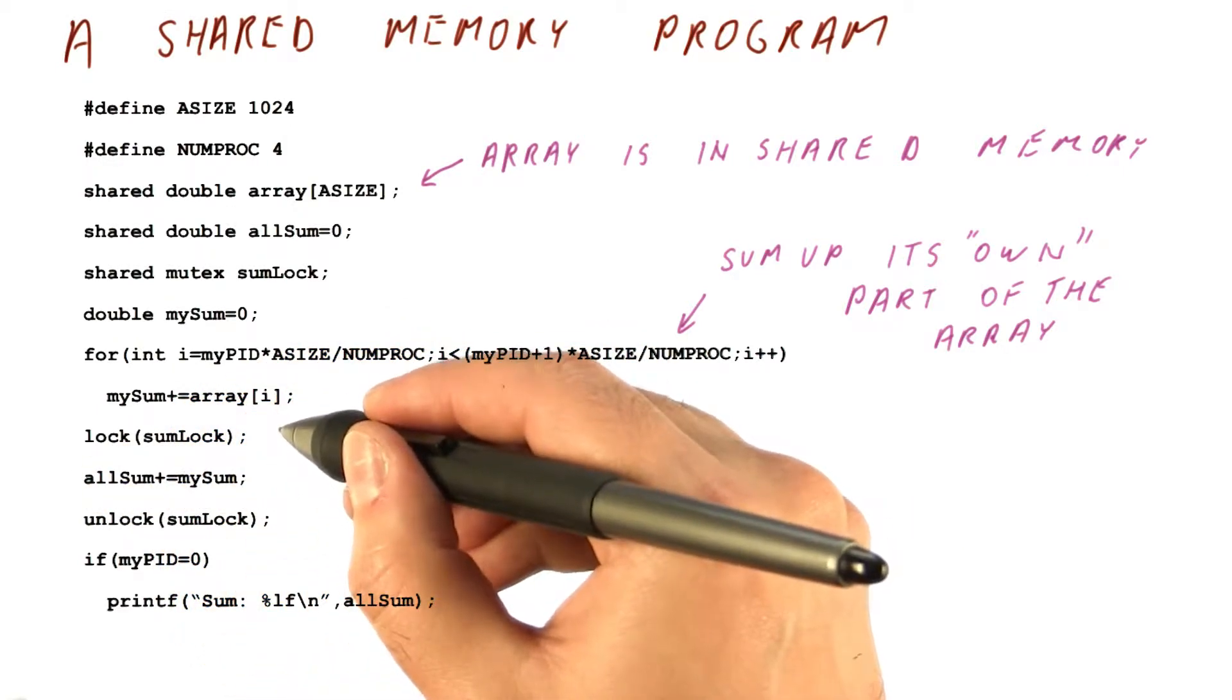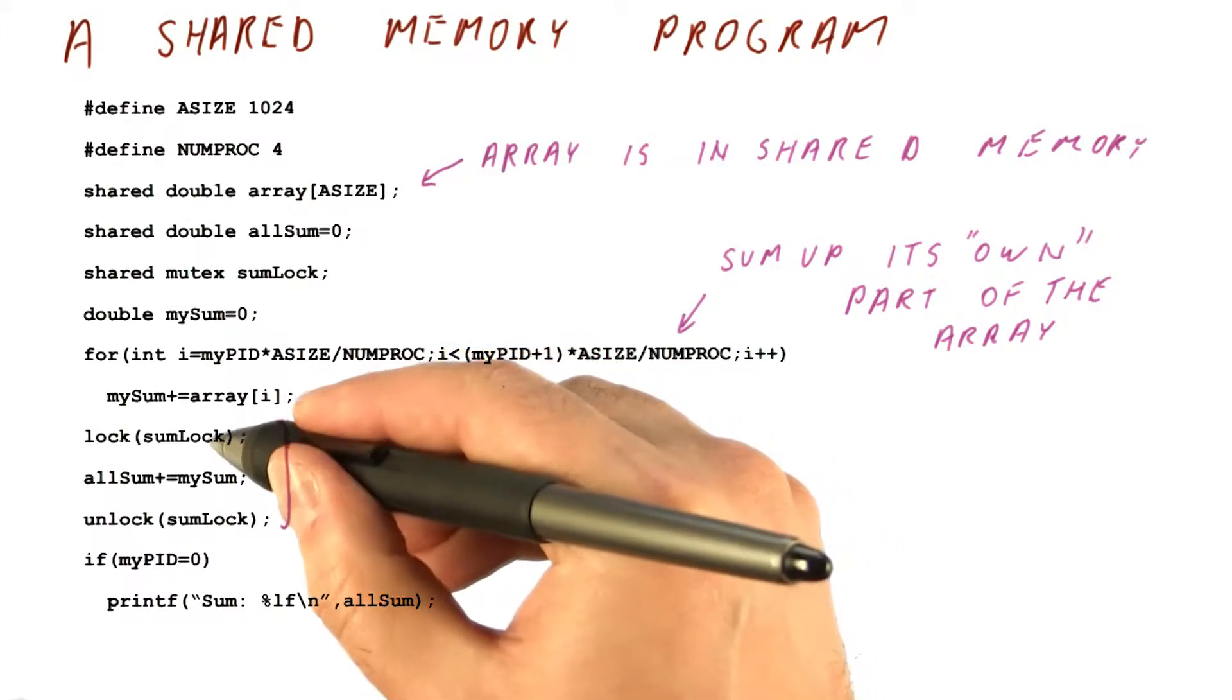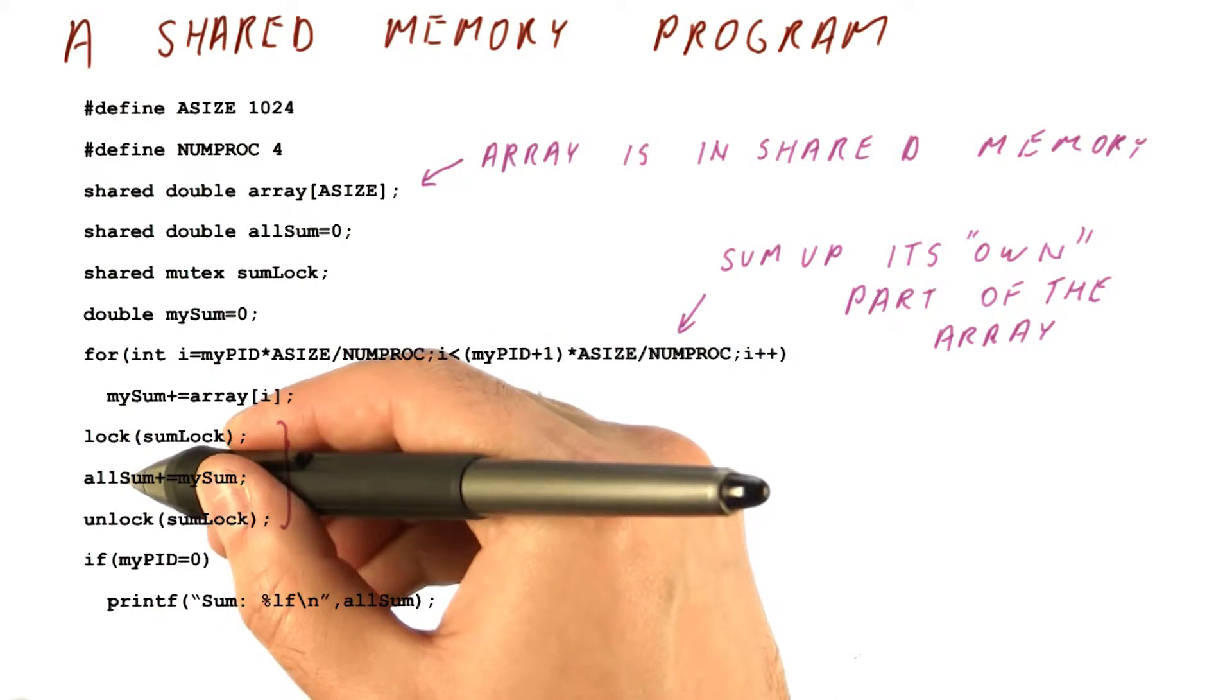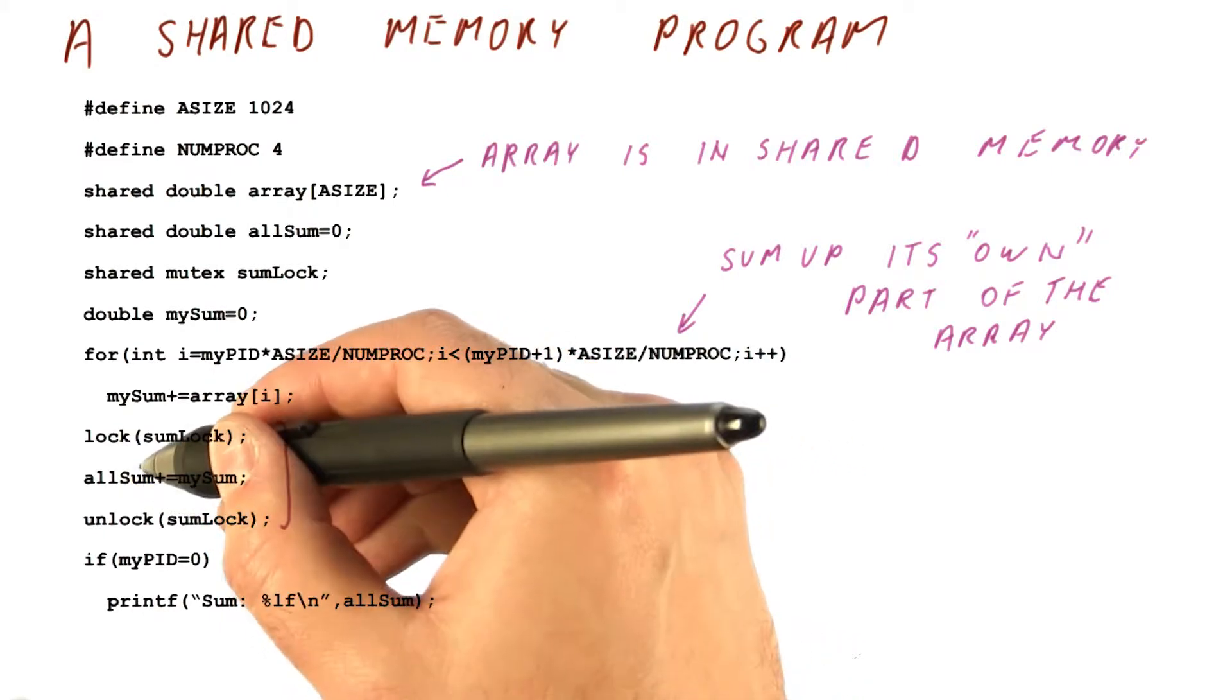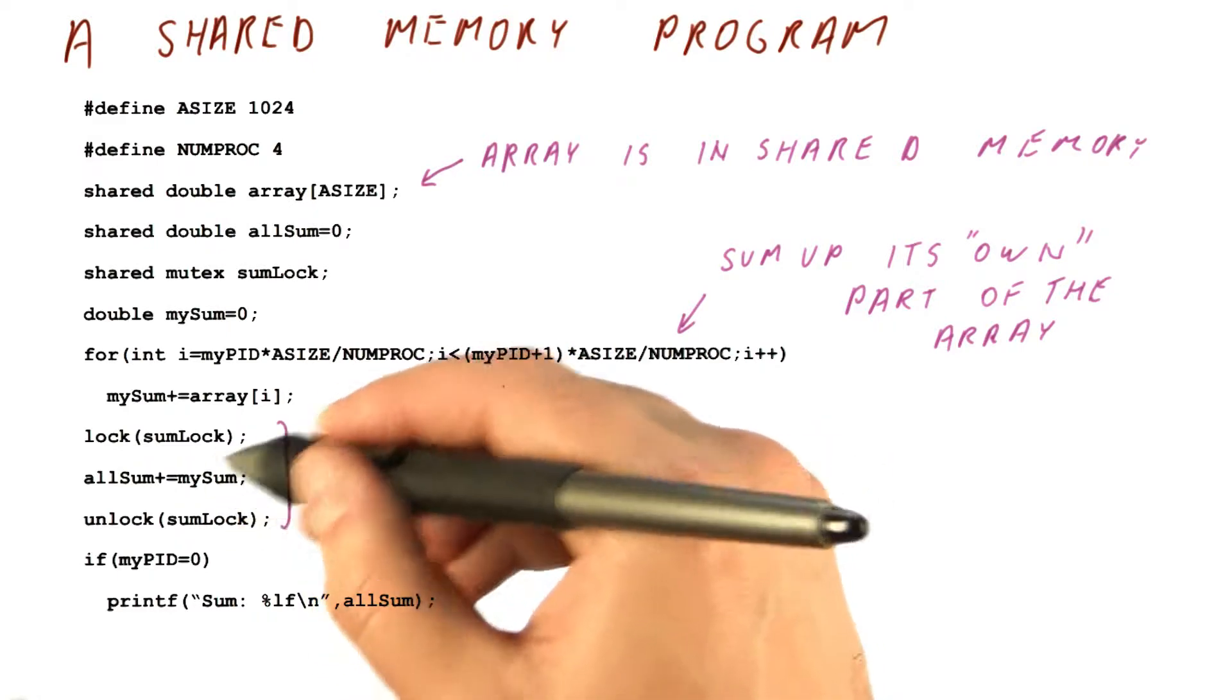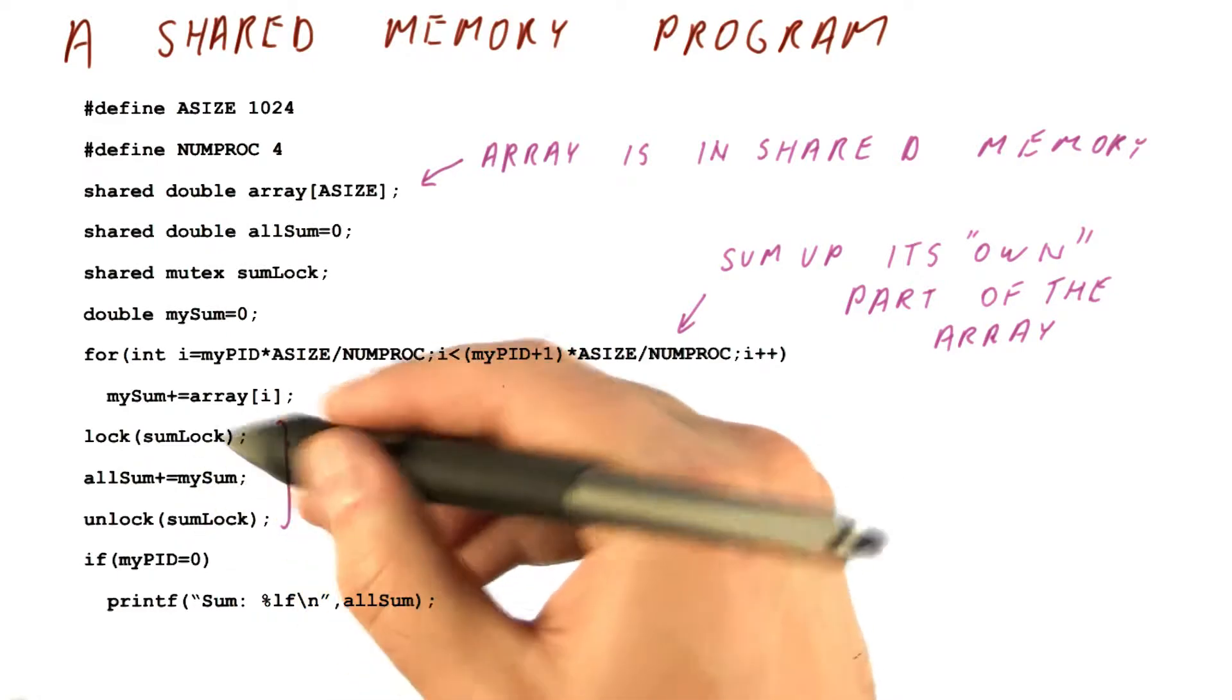So what they do is they synchronize, so they have a critical section around this. And then each core simply takes the overall sum and adds its own sum into it, and then frees the lock so that the next core can do it. So the cores can do this in any order they want.